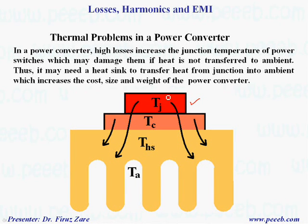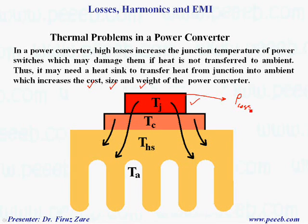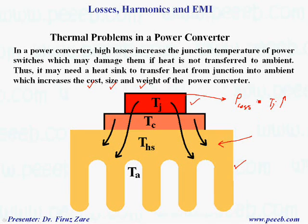It's quite important to understand total losses and how to optimize and reduce them to improve efficiency. In a power converter, high losses increase the junction temperature of power switches, which may damage them if heat is not transferred to ambient. A heat sink may be needed to transfer heat from junction to ambient, which increases cost, size, and weight. Reducing losses allows us to reduce system size and cost.